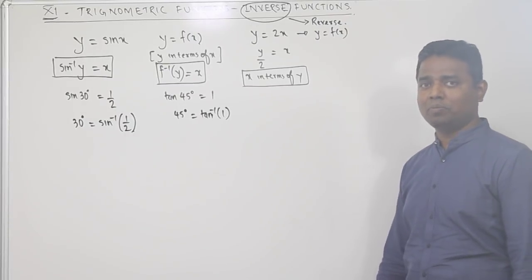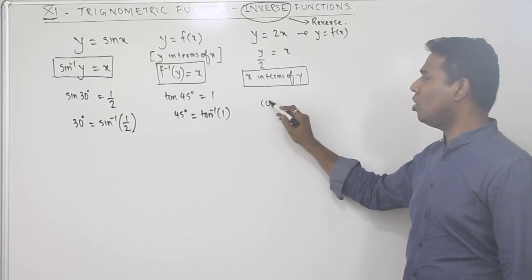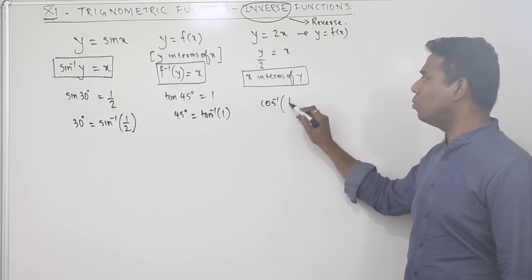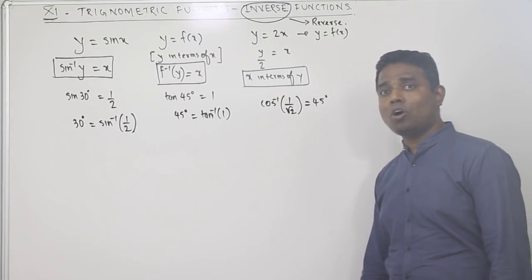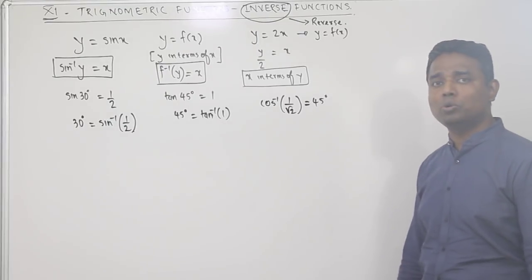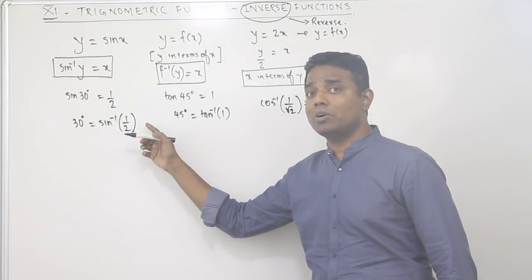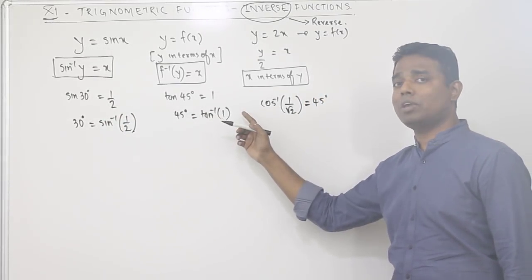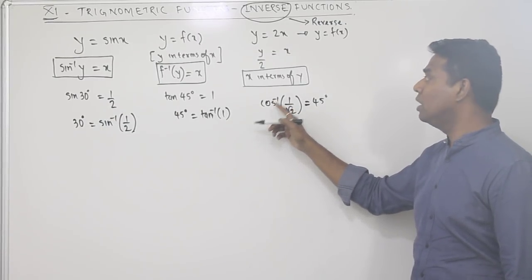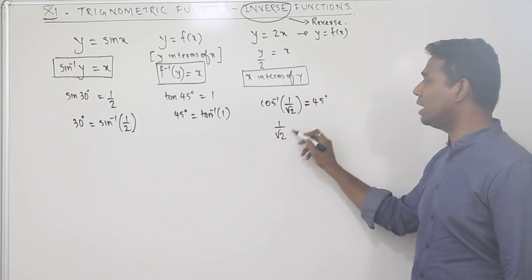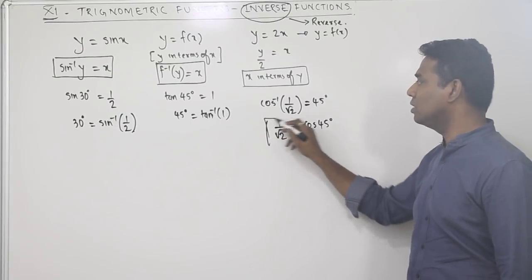Now another clarification. Suppose the question gives cos inverse of 1 upon root 2 equals 45 degrees. Just as we shifted sine to get sin inverse, and tan to get tan inverse, here we shift cos inverse to the other side. If we shift cos inverse, it becomes: one upon root two equals cos 45 degrees.